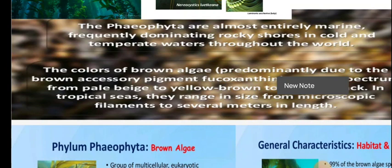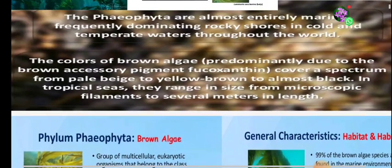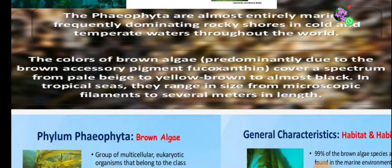The brown color is the predominant character of this group. This is due to the brown accessory pigment fucoxanthin. This pigment fucoxanthin covers a spectrum from pale yellow-brown to almost black. The chromatophores contain this golden-brown xanthophyll pigment.